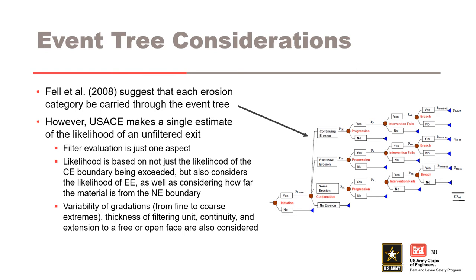Event tree considerations. Fell et al. 2008 suggested that each erosion category be carried through the event tree. However, the US Army Corps of Engineers makes a single estimate of the likelihood of an unfiltered exit, because filter evaluation is just one aspect. The likelihood of continuation of erosion is based not just on the likelihood of the continuing erosion boundary being exceeded, but also considers the likelihood of excessive erosion, how far the material is from the no erosion boundary, variability of the gradations confined to coarse extremes, thickness of the filtering unit, upstream to downstream continuity, and extension to a free or open face.